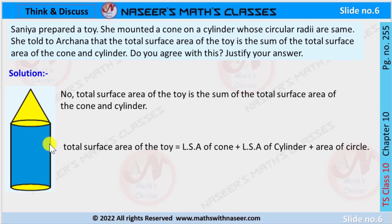We are going to solve Think and Discuss, page number 255, chapter 10. In the situation, Sanya prepared a toy — she mounted a cone on a cylinder whose circular radii are the same. She told Achana that the total surface area of the toy is the sum of the total surface area of the cone and cylinder. Do you agree with this? Justify your answer.